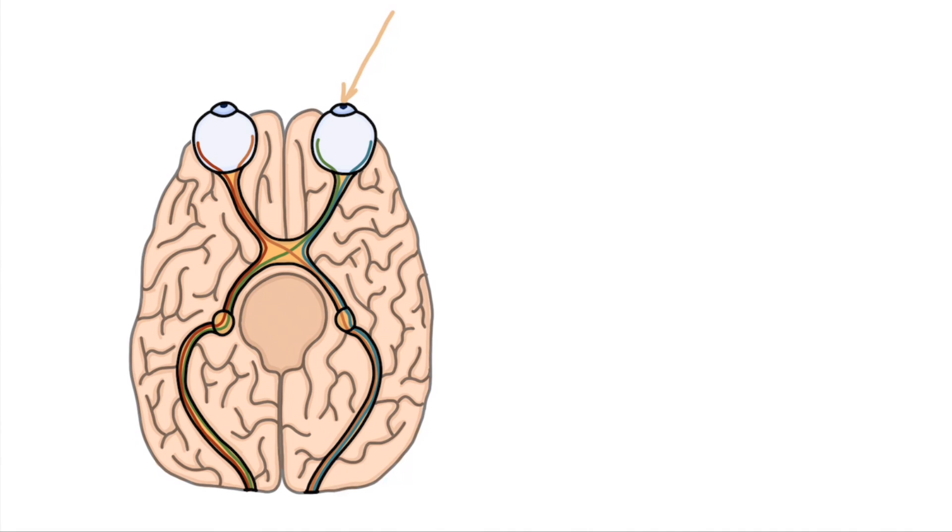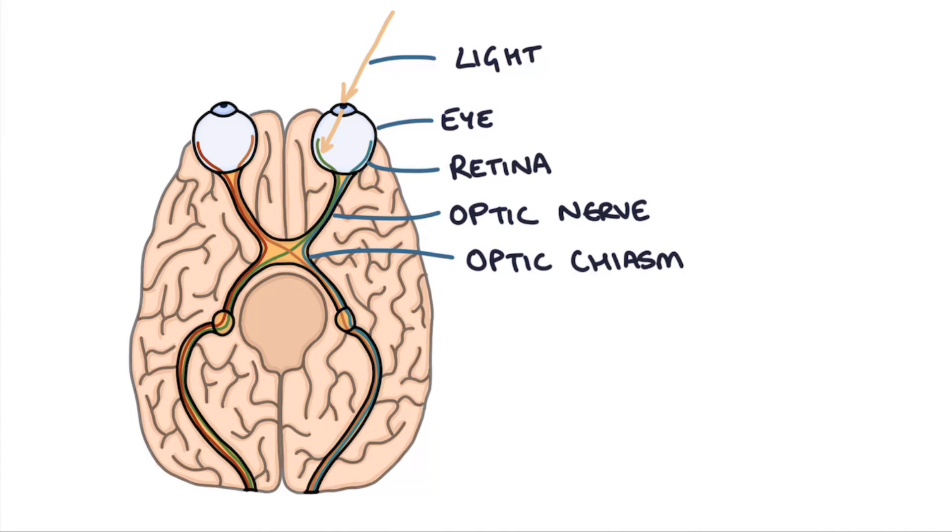Light comes into the eyeball, it then crosses over when it goes through the lens of the eye to the opposite half of the back of the eye. It then gets sensed here in the retina and it travels down the optic nerve, and it comes to the optic chiasm, which is in the center of the brain.